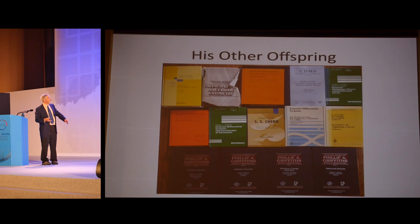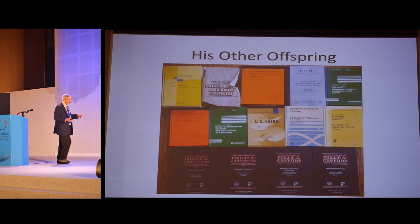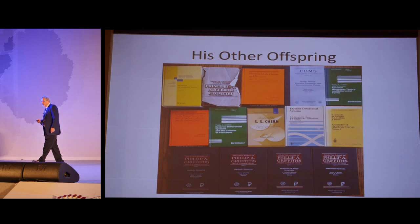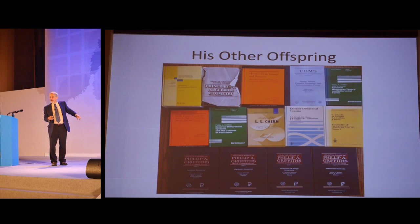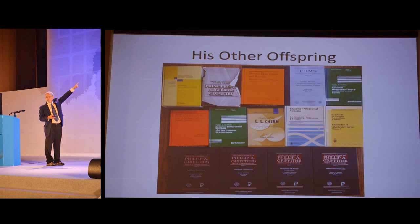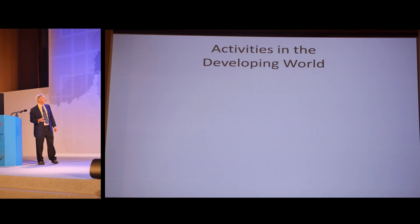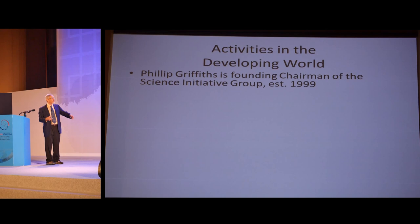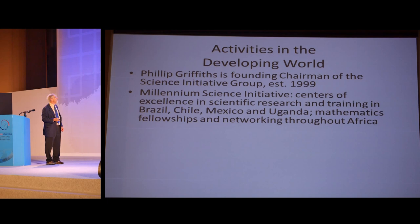His other offspring, as you can see, no expense was spared to take this high quality photograph. The brown areas you see are the floor of our dining room. In the middle, you can see a volume that Philip edited from one of the Chern conferences. You also will see up there Principles of Algebraic Geometry. I have two copies, one for office, one for home. This is the one that looks better. This is a book that really gets used. I'm just going to briefly touch on his activities in the developing world.